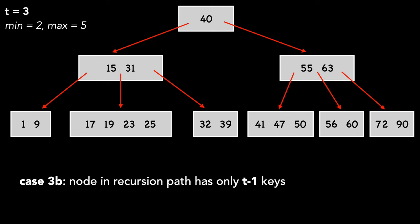Let's look at case 3b. Yes, B first, because the tree sets up nicely for it. We'll delete 17 to showcase this. In this situation, there is a node in the recursion path that has only T minus 1 keys.